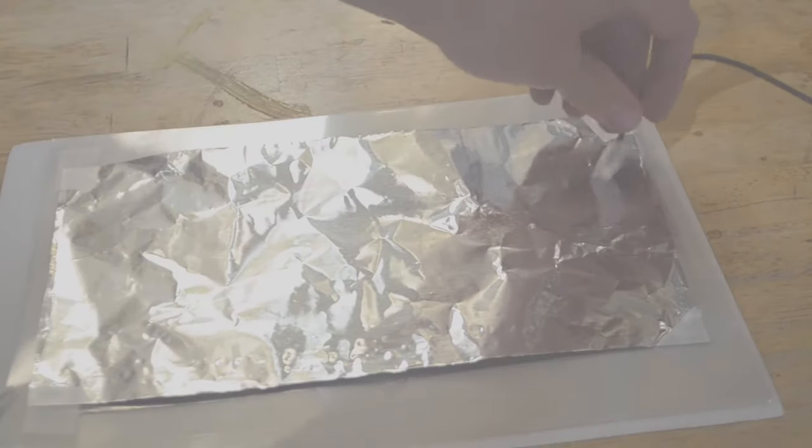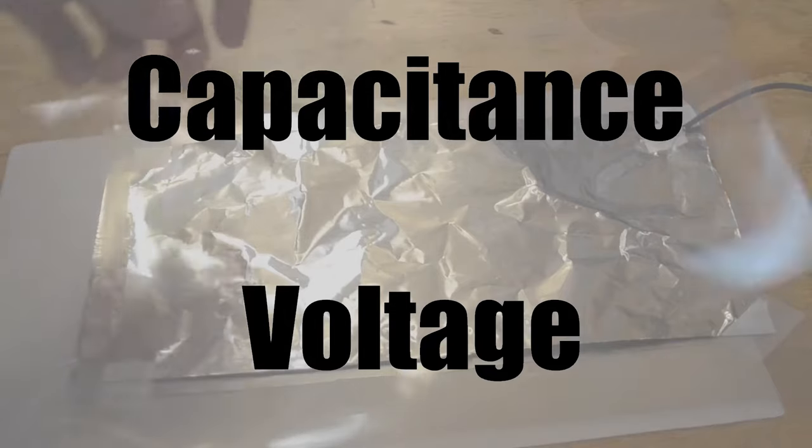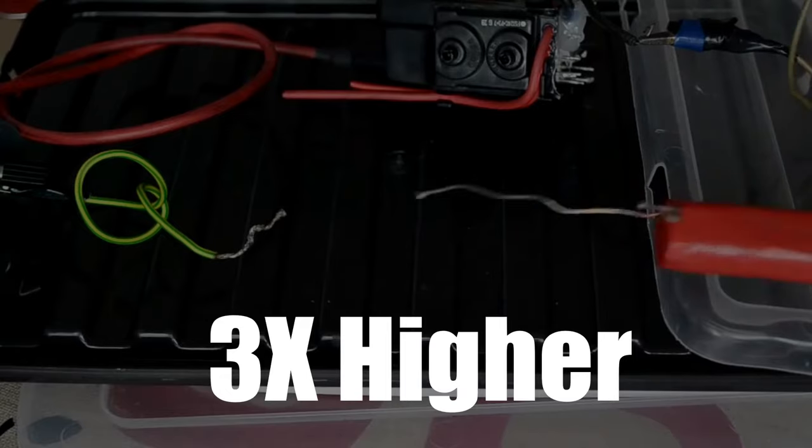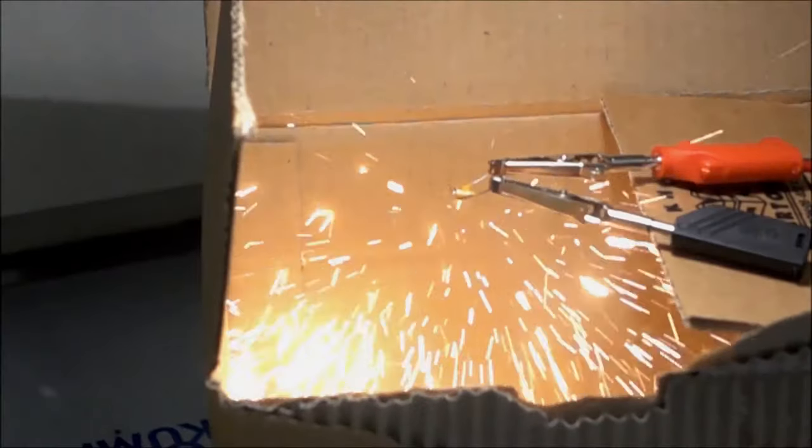Whenever you're looking at capacitors, there are two main values you need to look for: the voltage and the capacitance. The voltage of your capacitor or capacitor bank should be roughly three times the transformer's output to accommodate for high voltage spikes and peaks without blowing up.